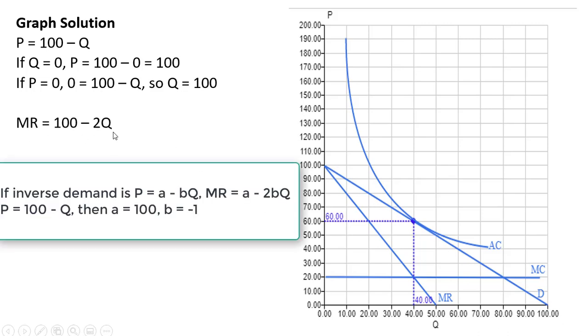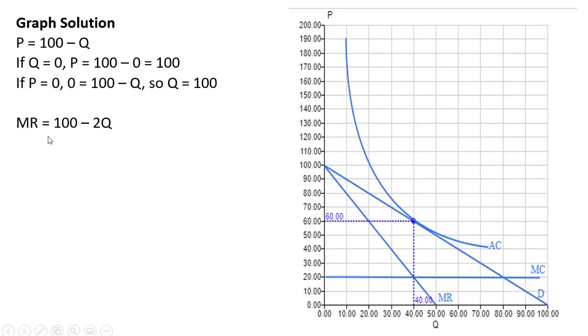Next thing we can graph is the marginal revenue curve. Here you'll notice once again that if Q = 0, marginal revenue is 100. So marginal revenue has the same vertical intercept as this demand curve. Likewise, if marginal revenue is zero, setting marginal revenue equal to zero and solving for Q, you're going to get 50. The marginal revenue will look like the demand curve with a slope that is twice as steep. So instead of marginal revenue intersecting at 100, it's going to intercept at half of that value. Half of 100 is 50.